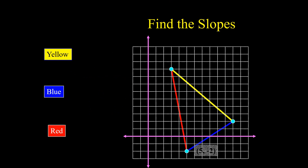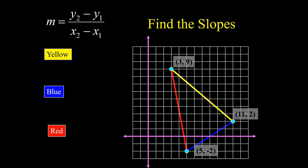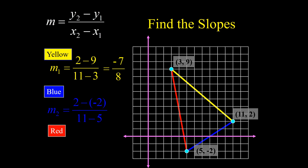Now find the slope of the given lines. For the yellow line, the points are (3, 9) and (11, 2). Using the slope formula: 2 minus 9 over 11 minus 3, the answer is negative 7 over 8. For the blue line, the points are (5, -2) and (11, 2): 2 minus negative 2 over 11 minus 5, the answer is positive 2 over 3. For the red line, the points are (3, 9) and (5, -2): negative 2 minus 9 over 5 minus 3, the answer is negative 11 over 2. These are the slopes of the given lines using the slope formula.